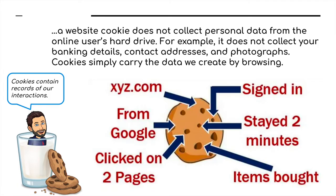Here are some examples of what would feature on a session cookie: the website which you are visiting, where you've come from (for example, a Google search), which pages within the website you've been clicking on, whether you signed in or not, whether you've got a user account, how long you stayed on particular pages or on the website itself, and if it's a shopping cart, whether you bought any of those items.